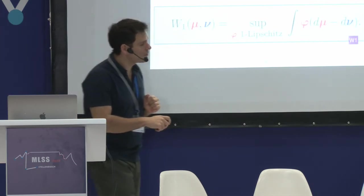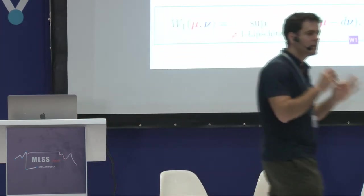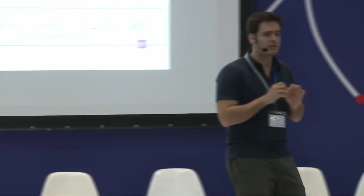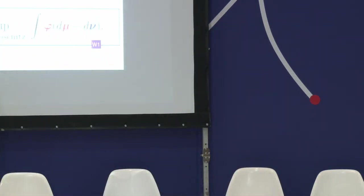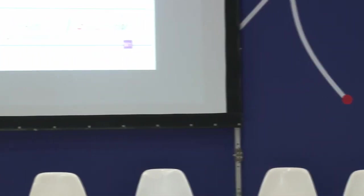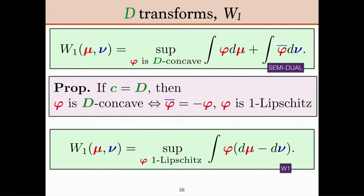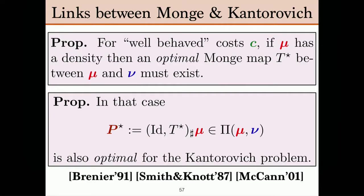When the cost is a distance (p=1), c-transform potentials are exactly Lipschitz functions, and the Wasserstein-1 distance can be written as a supremum over Lipschitz functions of ∫φ dμ − ∫φ dν. This is why W_1 is an integral probability metric as Arthur described — but only for p=1. For other p, Wasserstein distances are more general than integral probability metrics.